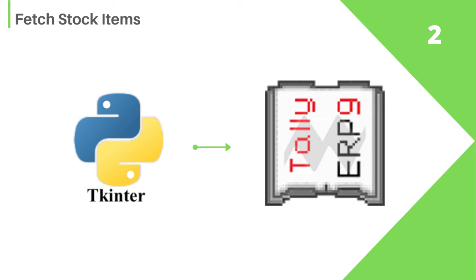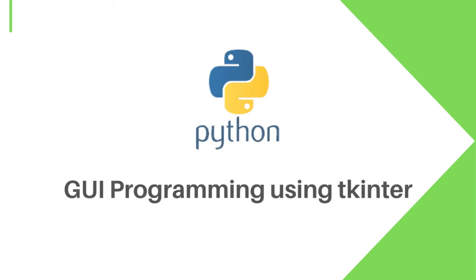Hello guys, welcome back to our channel and welcome to video 2 of the Python with Tally tutorial series. In this video we are going to fetch stock items from Tally, but instead of showing them in the console we are going to use a GUI — a graphical user interface — to display the data. For creating GUI with Python, I am using Python's built-in library tkinter. So without any further delay, let's start this video.